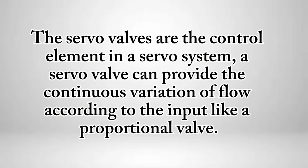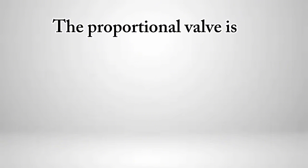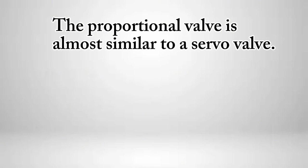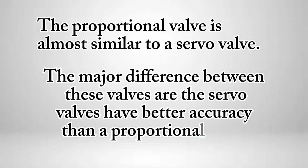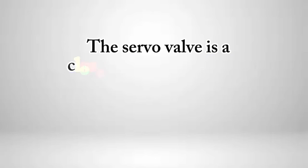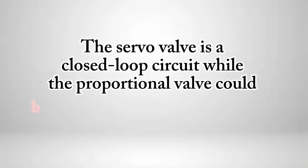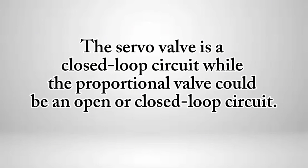A servo valve can provide the continuous variation of flow according to the input, like a proportional valve. The proportional valve is almost similar to a servo valve. The major difference between these valves is that servo valves have better accuracy than a proportional valve. The servo valve is a closed loop circuit, while the proportional valve could be an open or closed loop circuit.